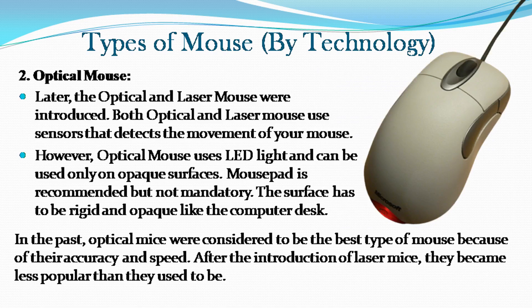Later, the optical and laser mouse were introduced. Both use sensors that detect the movement of your mouse. However, optical mouse uses LED light and can be used only on opaque surfaces. A mousepad is recommended but not mandatory — the surface has to be rigid and opaque, like a computer desk. In the past, optical mice were considered to be the best type of mouse because of their accuracy and speed.